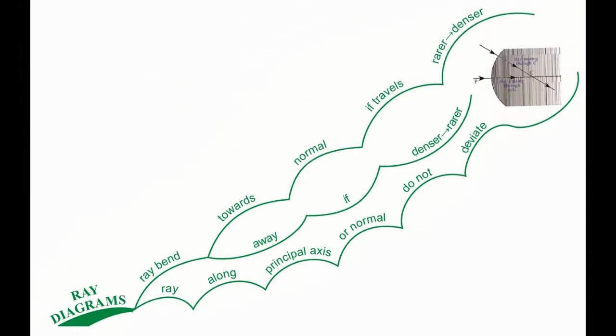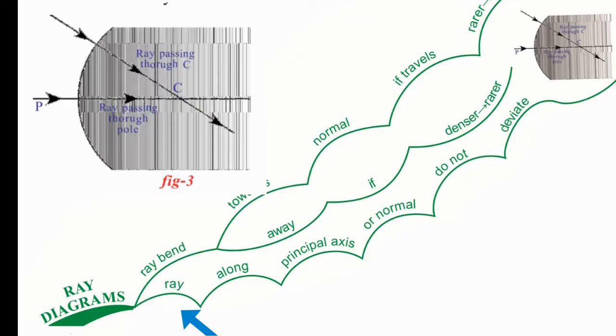Let us see the concept of Ray Diagrams using these keywords. A ray bends towards normal if it is traveling from rarer to denser medium. A ray moves away if it is traveling from denser to rarer medium. If a ray is traveling along principal axis or normal, it does not deviate, as shown in the figure.